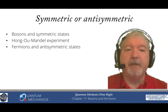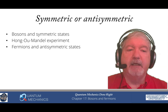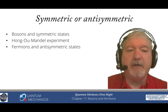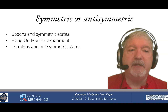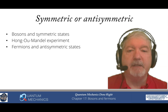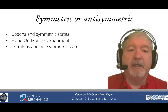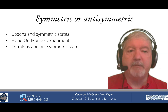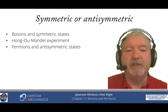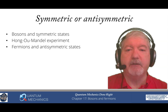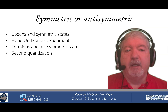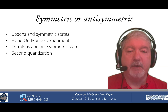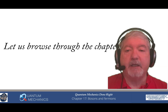Then we move on to fermions and antisymmetric states. In condensed matter physics, nearly everything works with fermions rather than bosons because electrons are fermions. Fermions correspond to the case with a minus sign, which is called an antisymmetric state. It takes a lot of work to deal with them properly because sign changes occur all the time. Along the way we get into a more formal treatment of second quantization and how to work with fermionic creation and annihilation operators.